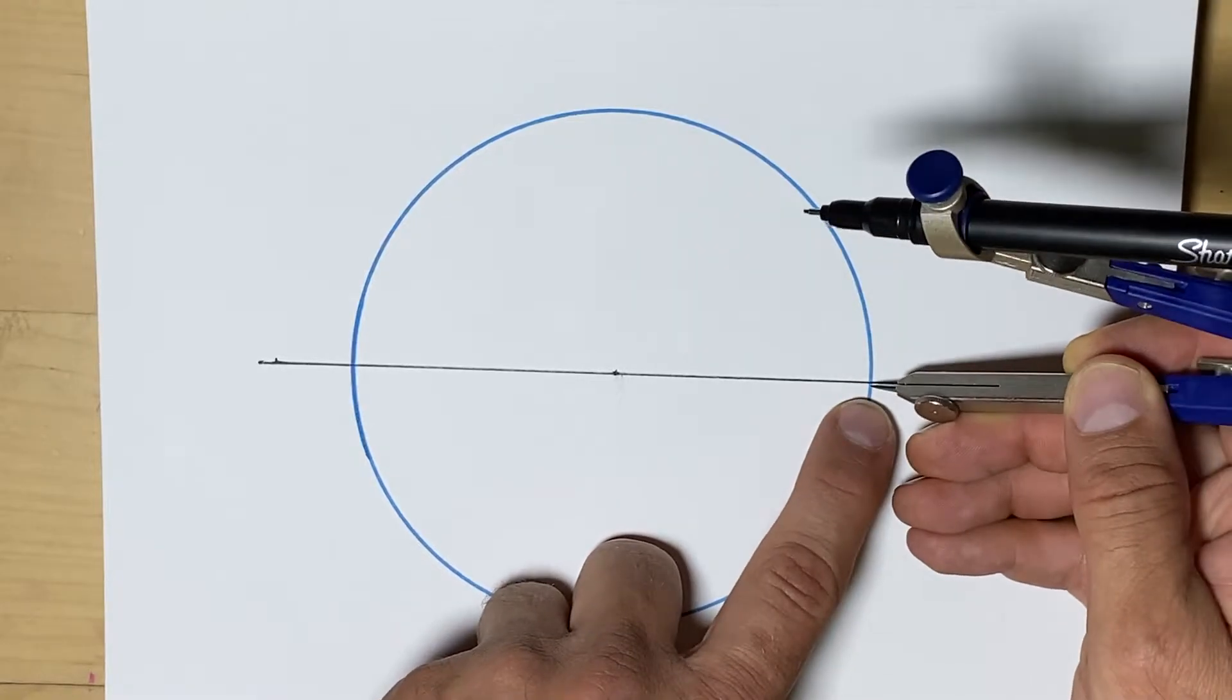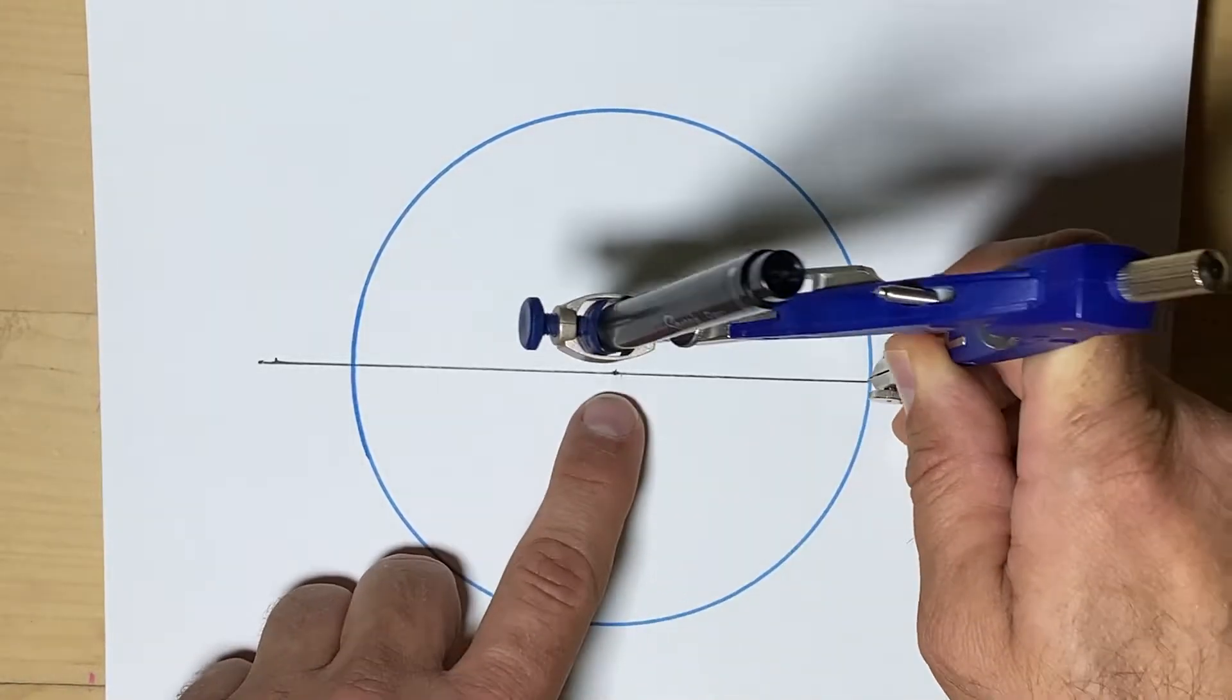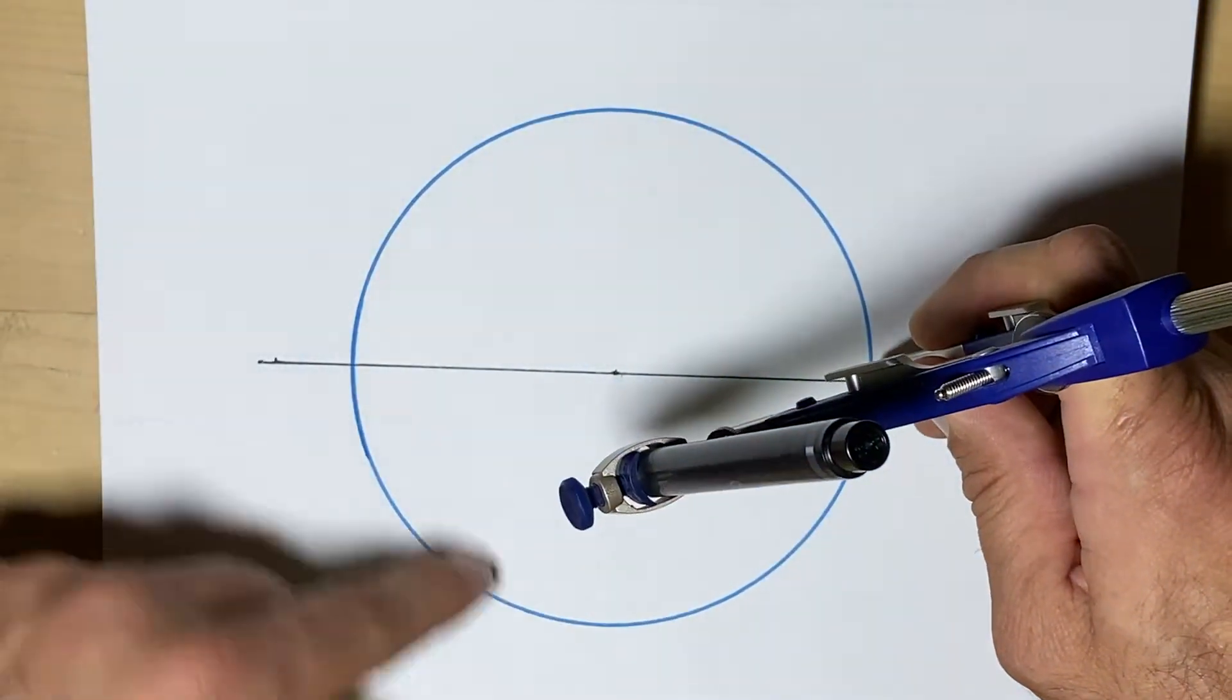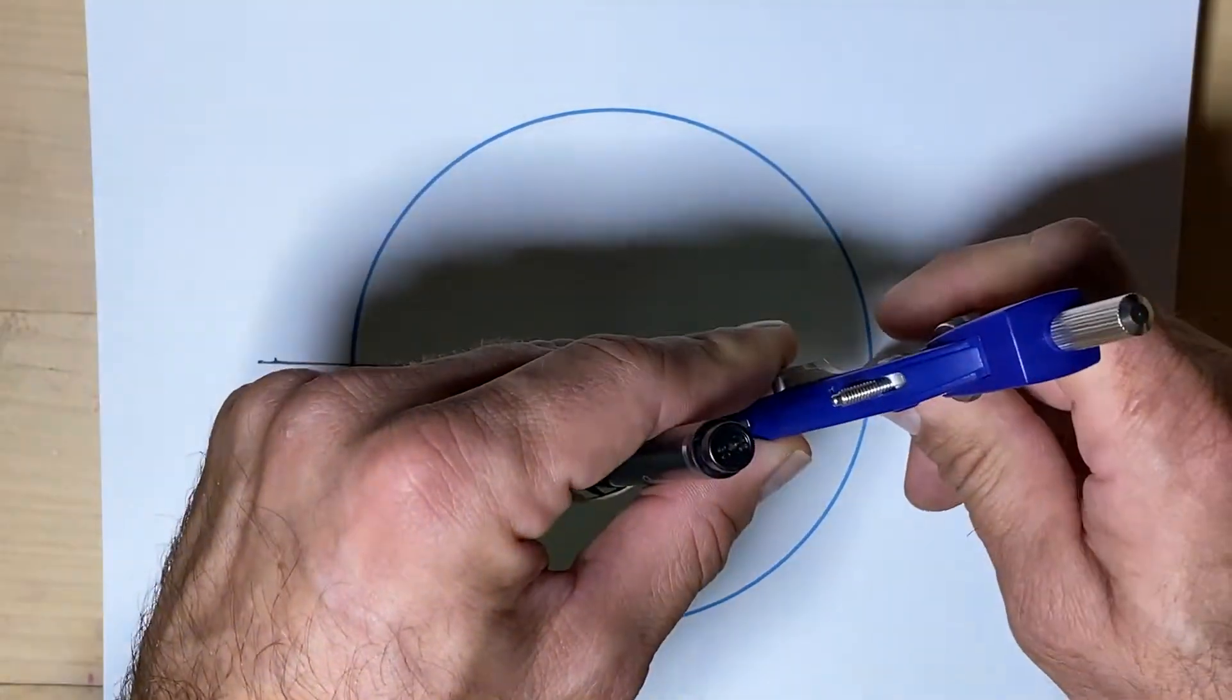We'll start by putting the point on the edge of the circle, and we've got to go past halfway. Otherwise, the two arcs we're going to make will not meet. We want to see where they meet.